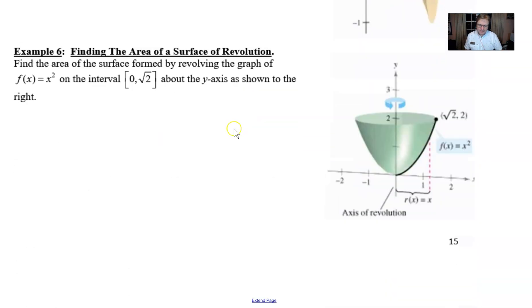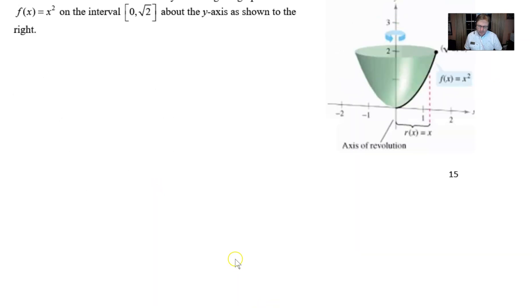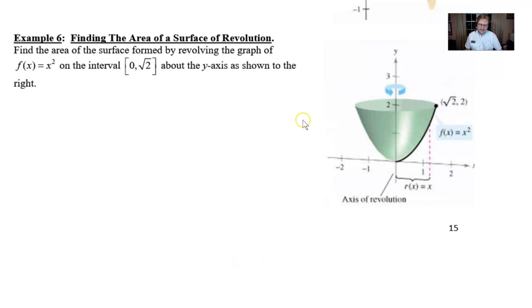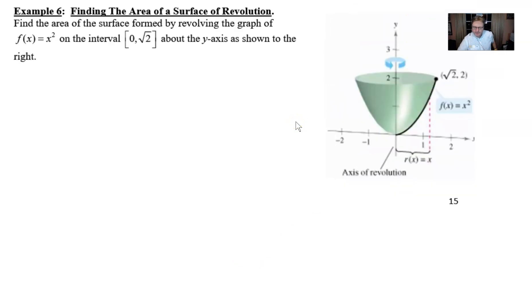And I think example six is going to illustrate that very nicely. So scrolling down to our wonderful example six. So what we've got here is a question that's asking us to find the area of the surface formed by revolving the graph of f(x) equals x squared on the interval zero to square root of two about the y-axis as shown to the right.